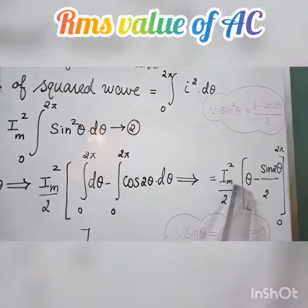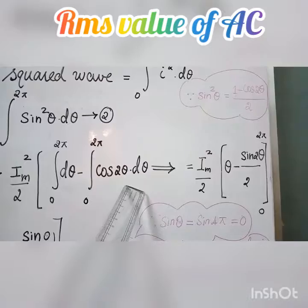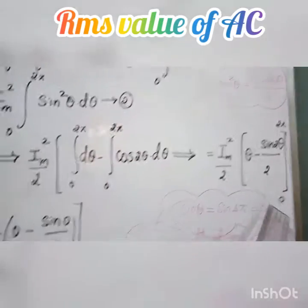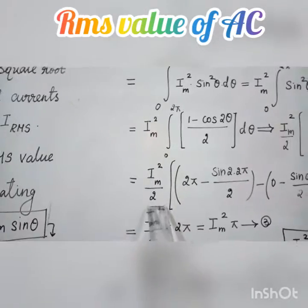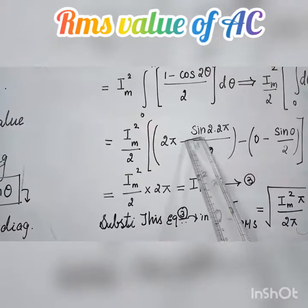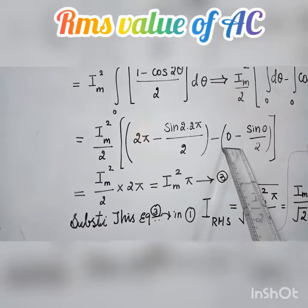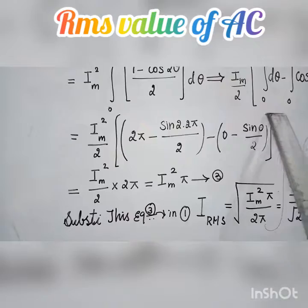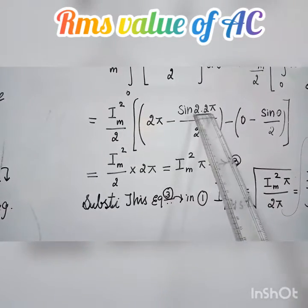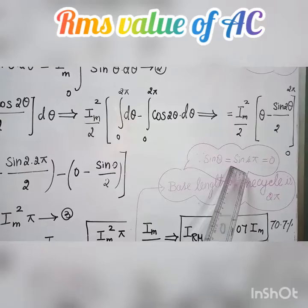Evaluating the integral gives [θ − sin(2θ)/2], substituting limits 0 to 2π. At the upper limit θ = 2π: 2π − sin(4π)/2. At the lower limit θ = 0: 0 − sin(0)/2. Since sin(0) = 0 and sin(4π) = 0, both sine terms vanish.